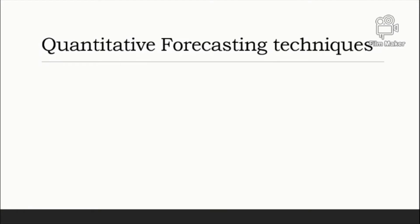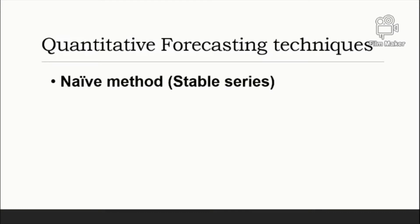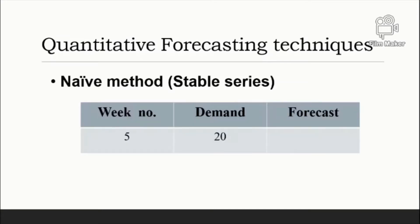The first technique we will study is called the naive method. A naive forecast uses a single previous value of a time series as the basis of a forecast. The naive approach can be used with a stable series, with variations around an average, with seasonal variations, or with trend. With a stable series, the last data point becomes the forecast for the next period.